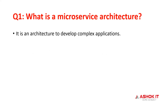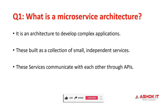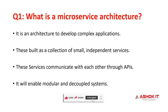This architecture is used to develop complex applications — we can also call them high-scale applications — converting a big application into small services which can be developed and deployed independently. These small services can communicate with each other using APIs. It is a modular and decoupled architecture.